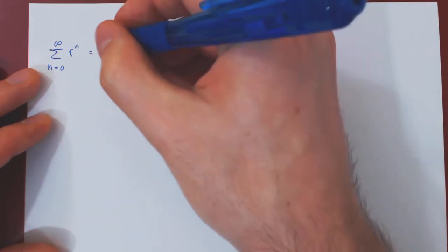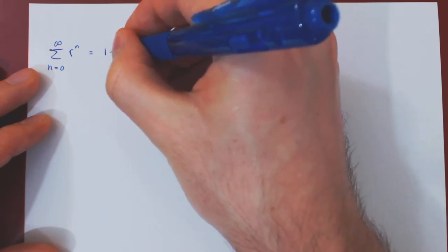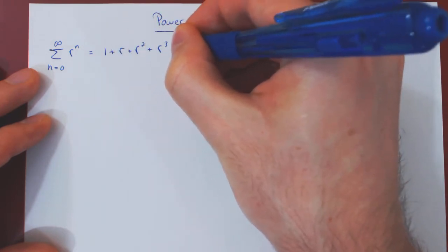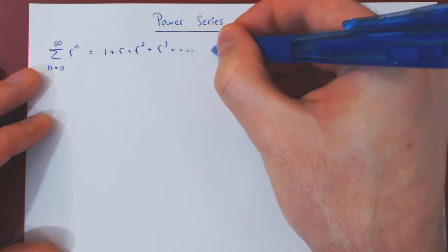If we expand the series, we get 1 plus r, plus r squared, plus r cubed, and so forth.